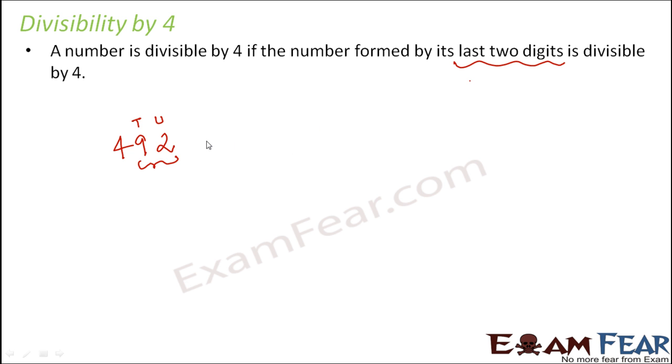Now you have to check by actual division if 92 is divisible by 4 or not and that is pretty simple. So if you actually check this, you see that 92 is divisible by 4 and therefore this entire number would be divisible by 4.